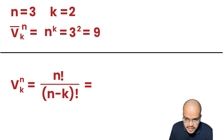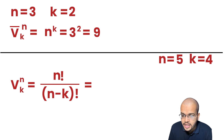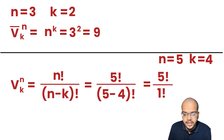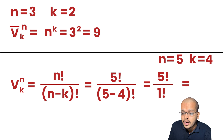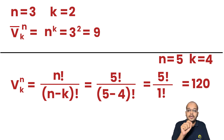Let me consider n equal to 5 and k equal to 4. So we compute 5 factorial divided by (5 minus 4) factorial, which is 5 factorial divided by 1 factorial. 5 factorial is 120 and 1 factorial is 1, so the answer is 120. The formula to find out variations without repetition is n factorial divided by (n minus k) factorial, and with repetition it is n to the power of k.